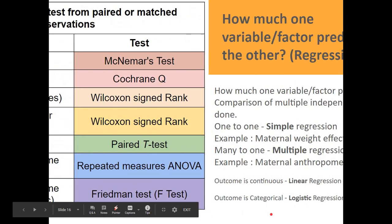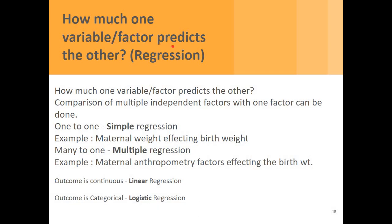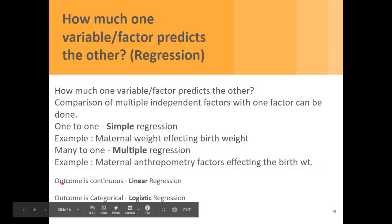If you want to find out how much one variable predicts the other, we use regression. Comparison of one independent factor to one outcome is called simple regression — for example, maternal weight affecting birth weight. Many factors to one outcome is called multiple regression — for example, maternal anthropometry factors affecting birth weight. When the outcome is continuous it is called linear regression; when the outcome is categorical it is called logistic regression.